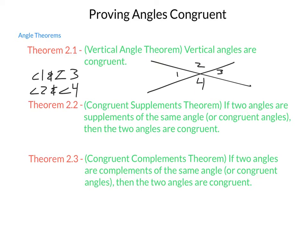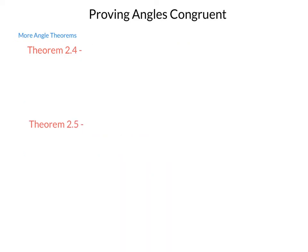What else do we have? Theorem 2.4 states simply that all right angles are congruent.